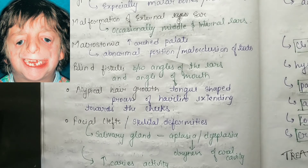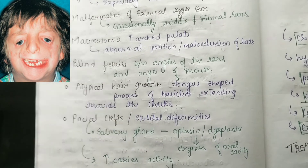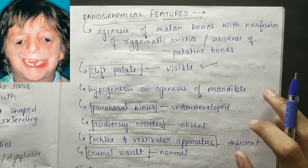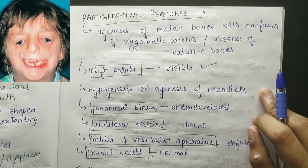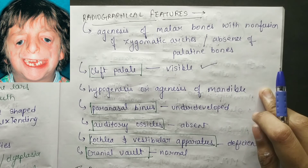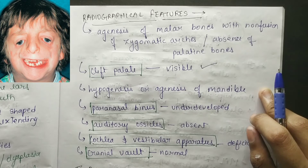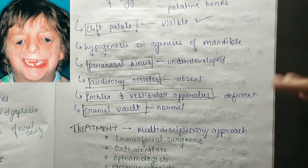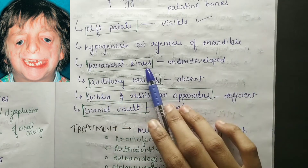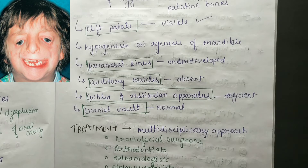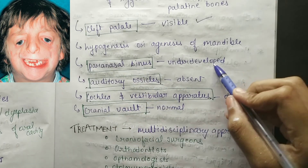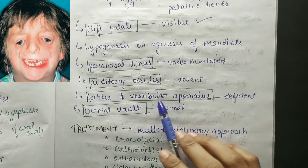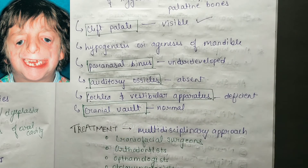Looking at radiographic features, there is agenesis of malar bones with non-fusion of zygomatic arches, absence of palatine bone, cleft palate, and hypogenesis and agenesis of the mandible. Paranasal sinuses are also underdeveloped.